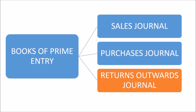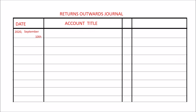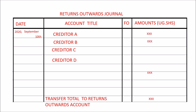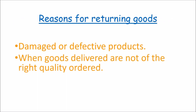Then we have the returns outwards journal. If you're a businessman and you purchase goods for resale from your supplier, but then discover that the goods supplied are not okay, you may be prompted to return the goods back to the supplier. When you return purchases to your supplier, these are called returns outwards or purchases returns. The returns outwards journal records goods returned to the supplier. The total of the returns outwards journal is credited to the returns outwards account in the general ledger, and the individual creditors' accounts are debited in the purchases ledger. Reasons for returning goods may include: the goods are damaged or defective, not of the right quality, or not of the right quantity.